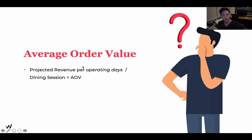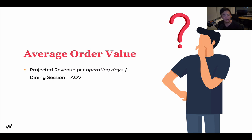We specify operating days because every day is different — you have slow days, busy days, and prime days. Even though a month has 30 days, it doesn't mean you operate all 30. We need to account for busier days and days you don't open. So: projected revenue divided by the dining sessions equals AOV.